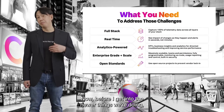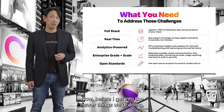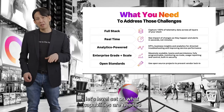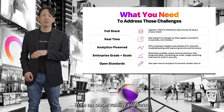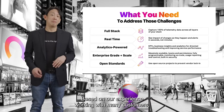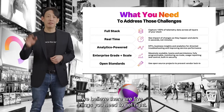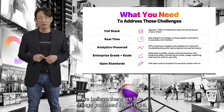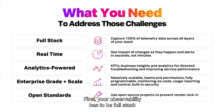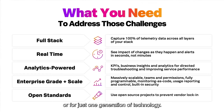Before I get into newer things, let's level set on what capabilities are needed from an observability platform. Based on our experience working with many customers, we believe there are five things you need to get right. First, your observability has to be full stack and end to end — not just at one layer or for one generation of technology, but across the entire stack from infrastructure up through applications, end user experience, databases, network, and APIs.